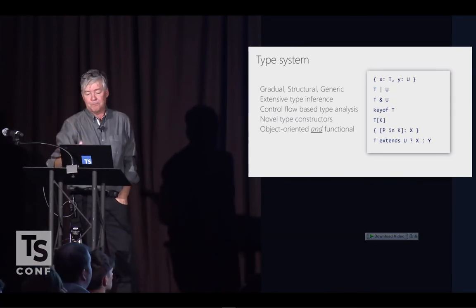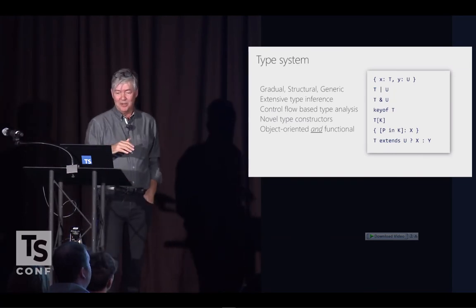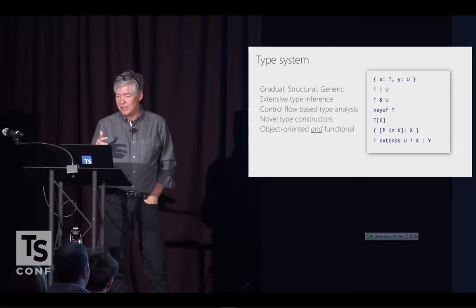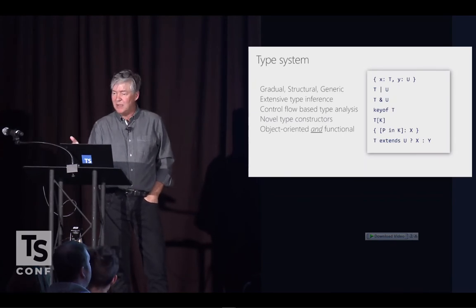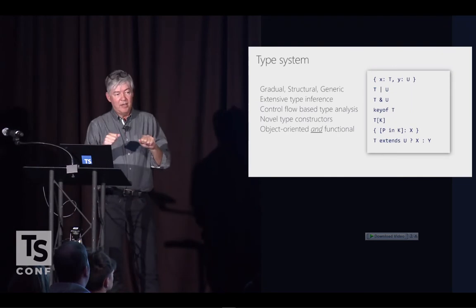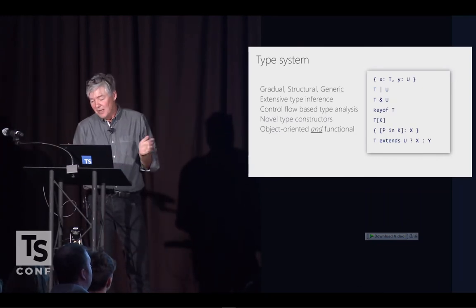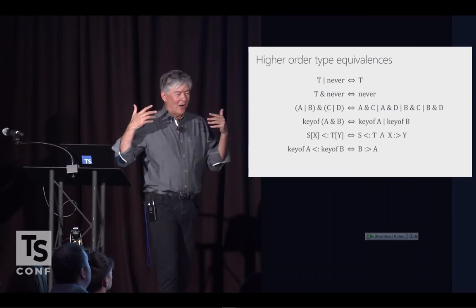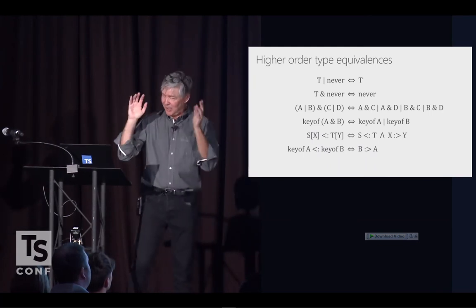Then came keyof and index access types, map types, and our new baby: conditional types. These are particularly interesting because they only exist in higher-order form — they're only present when one of the constituents is a type parameter. Like keyof T: the minute we know what T is, it evaporates and just becomes a union of string literals. Increasingly, our work in designing the type system is about reasoning about these higher-order type equivalences of all the type constructors we've introduced.